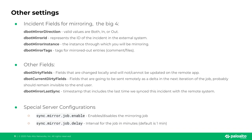Other important fields are dbotDirtyFields, dbotCurrentDirtyFields, and dbotMirrorLastSync. Lastly, there are special server configurations: the sync mirror job enable and sync mirror job delay, which control whether the mirroring job is enabled or disabled, and how often it kicks in. By default this is one minute, and we recommend customers not change these values.